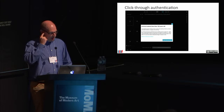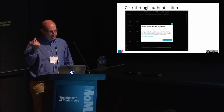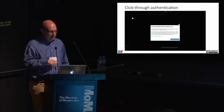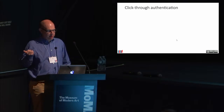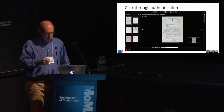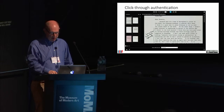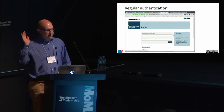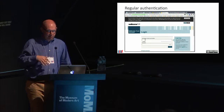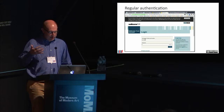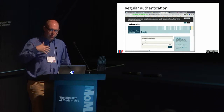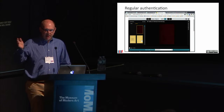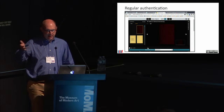The IIIF authentication API allows the Wellcome Library to enforce various terms and conditions on content, so when I accept these terms and conditions I'm straight in. But there are other kinds of content deemed not suitable for the public, so you have to authenticate properly. The Universal Viewer via the authentication API is orchestrating the user's journey through the Wellcome Library's own backend access control server — in this case a CAS server.